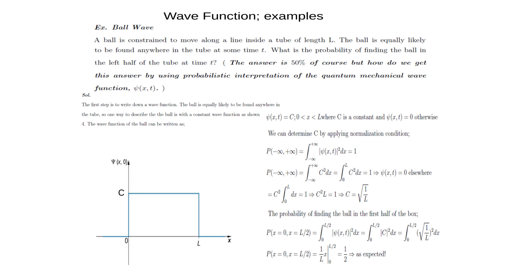Nowadays the most commonly accepted idea is the Copenhagen interpretation, which agrees with experiments most. We looked at free particles before. What if we have bound particles? This question describes a particle confined between zero and L along a line with a constant wave function. What is the probability of finding it on the left side of the box? Assume this is a particle in a box going right and left — one dimensional. We are only looking at what happens along x, though this could be done in three dimensions as well.